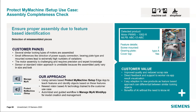Another use case we can address is feature-based identification, which is not necessarily specific to machine tools. Looking at the electric motor housing on the right-hand side of the screen, we've identified a number of different features, and based on these features, it will produce output telling you if this is motor X, Y, or Z that is currently loaded.